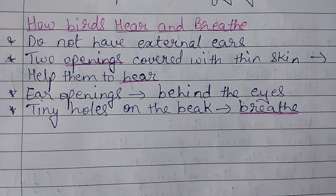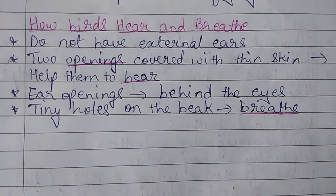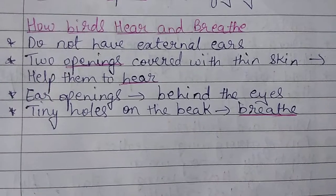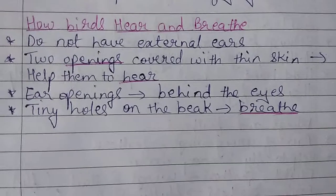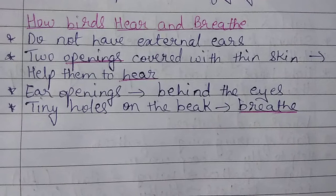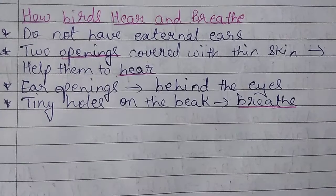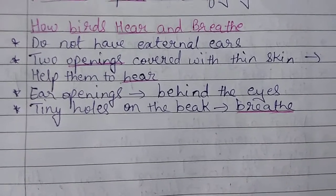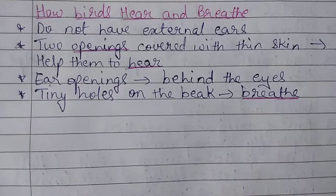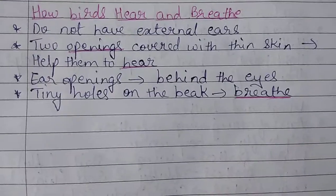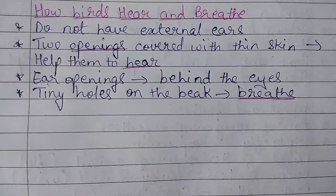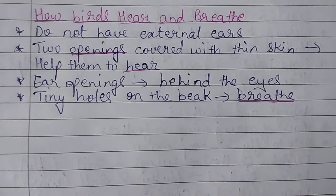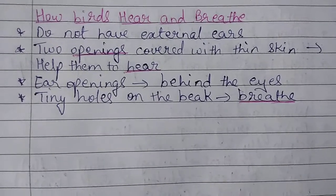We are studying about the parts of the body of a bird. We have seen the different parts — the wings, the feathers — and studied how they help the bird. Then we studied about the beak, how the beak helps the bird, and also the legs, feet, and tail.